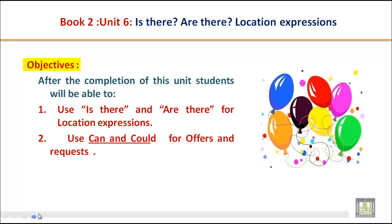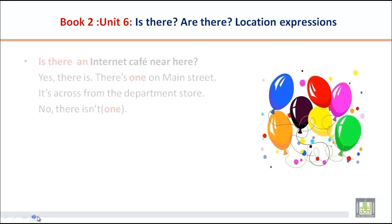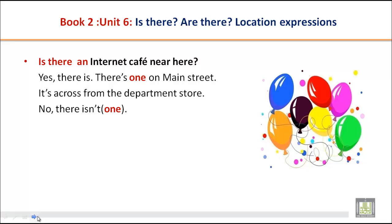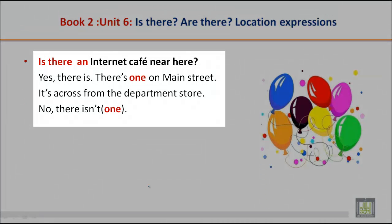Let us practice 'is there' first. Is there an internet cafe near here? Yes, there is. There is one on Main Street. It's across from the department store. 'Across' means on the other side. But if there is none, you will say: No, there isn't.